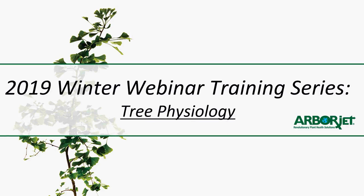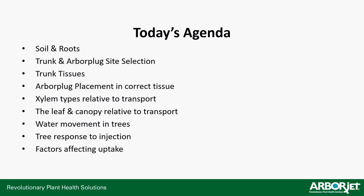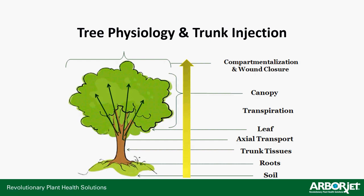Welcome to the fifth installment in the 2019 Arborjet winter webinar training series. Today we're going to cover tree physiology: soil and roots, trunk and arbor plug site selection, trunk tissues, arbor plug placement, xylem types relative to transport, the leafing canopy, water movement in trees, tree response to injection, and factors affecting uptake.